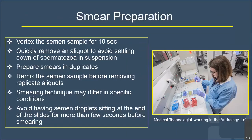Sperm morphology involves a series of steps, the first being smear preparation. The most important step is to always vortex the semen sample for 10 seconds, ensuring the sample aliquot is representative and no heterogeneity is introduced. Smears are prepared in duplicate, and before removing the second aliquot, always vortex the sample again. The smearing technique differs depending on whether it is a neat semen sample or a concentrated one.